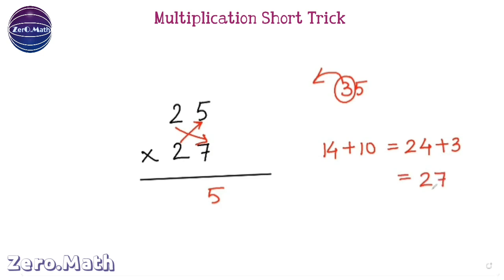Again, we are getting a 2-digit number. So what we have to do? We have to simply write the last digit, which is 7. Again, take a carry forward 2.